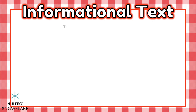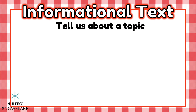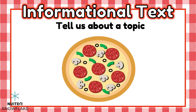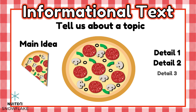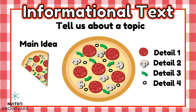Informational texts tell us about a topic. Think of the text as a big delicious pizza. When we read, we want to find the main idea. The main idea is what the text is mostly about. Think of the main idea as a slice of the pizza. Next, we have the details of the text. Think of the details as all of the toppings on a pizza.